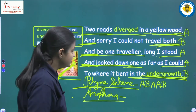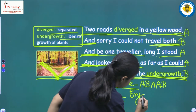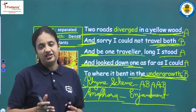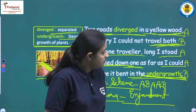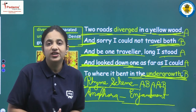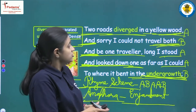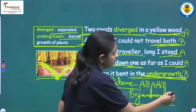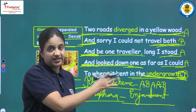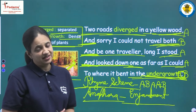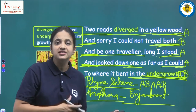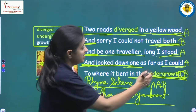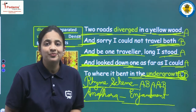Another literary device is enjambment. Enjambment occurs when a sentence continues to the next line without any punctuation mark or pause. In this stanza, there is no full stop after 'stood' — only at the end of the stanza. This continuation without a pause is the example of enjambment.